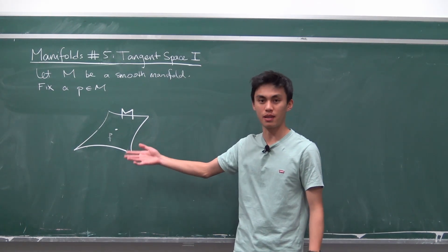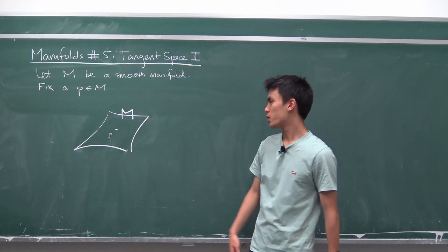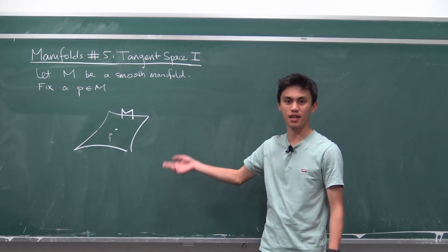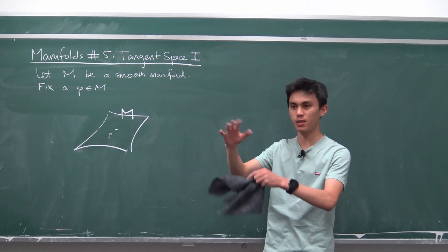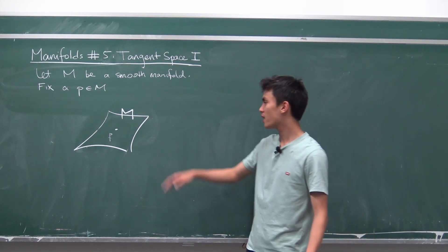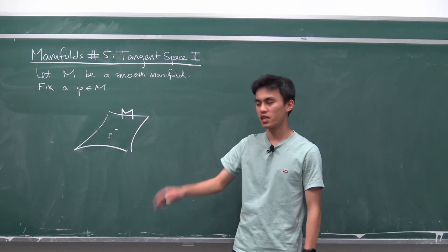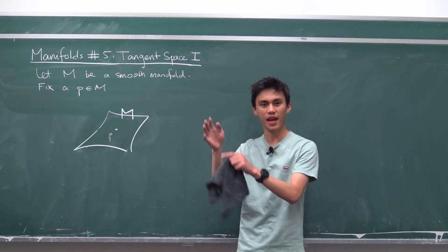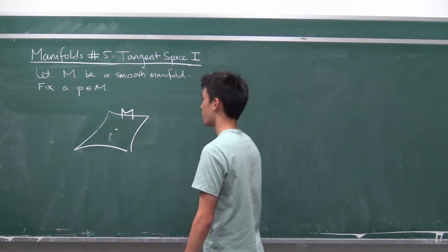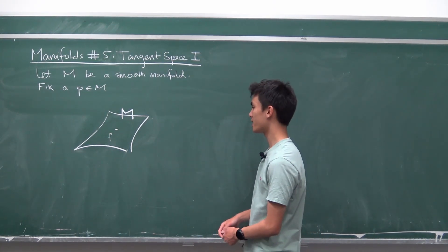It turns out tangent vectors are going to be defined in terms of a directional derivative. We're not thinking about the manifold extrinsically — meaning we don't embed it in some high-dimensional space. We think about it intrinsically. So we want to construct the idea of a tangent vector to our manifold intrinsically.